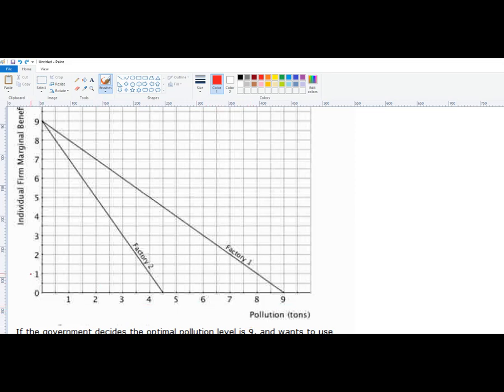For example, if they set the price at $1, factory 1 will produce to here. We just follow this out to where it hits that demand curve. Factory 2 will produce 8 units. So that's 4 plus 8. That's a total of 12 pollution units. That's too much pollution.